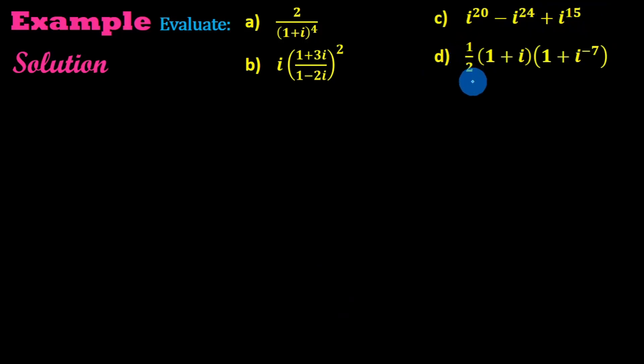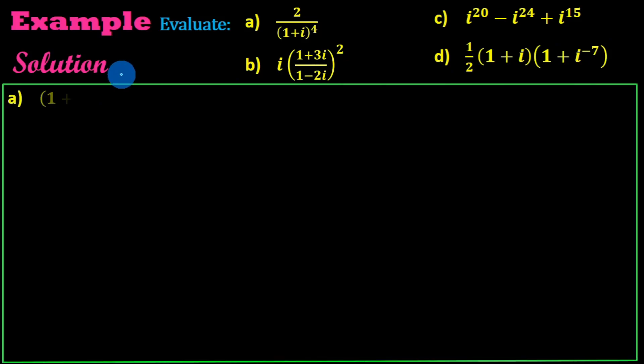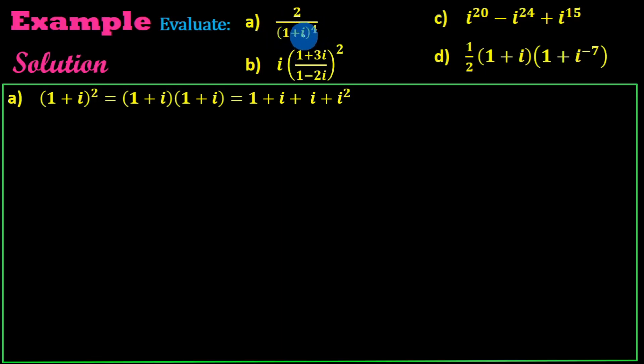One over two into one plus i, the whole under bracket. Now because that time is one plus i to the fourth. Let me simplify using the a plus b formula. So in general, one plus i the whole to the power of 4.